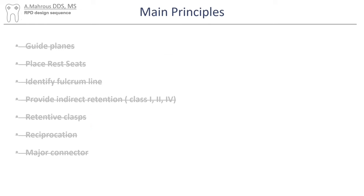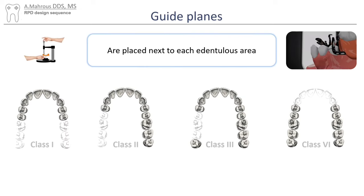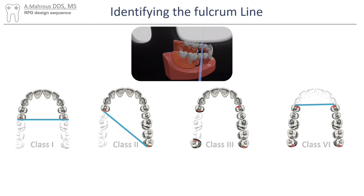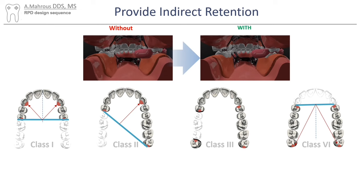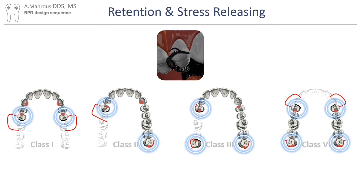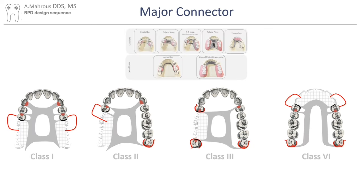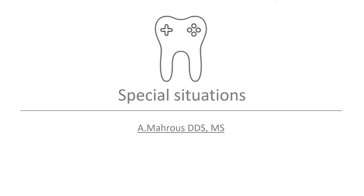With that, the steps of designing an RPD are complete. So let's do a little recap. The first thing that's added are the guide planes, followed by the rest seats, then identify the fulcrum line, and then use it to determine where to place our indirect retainers. Then we add the retentive clasps, we add the reciprocal elements, and finally the major connector. Now that we have a basic understanding of RPD design, it's important to point out a few special situations.